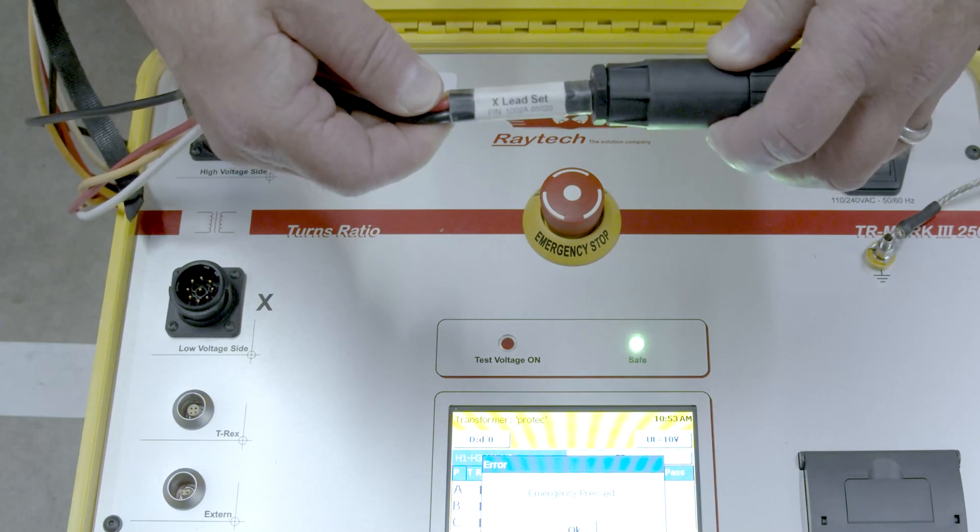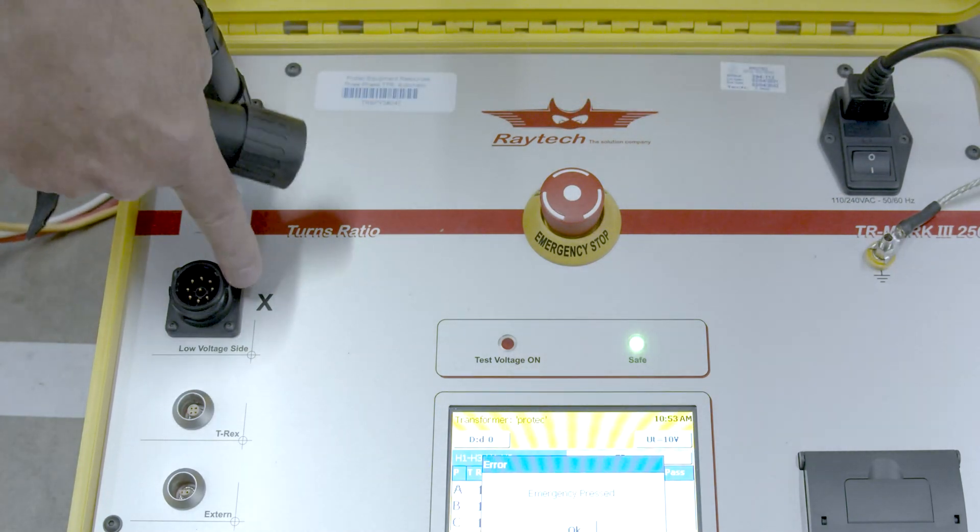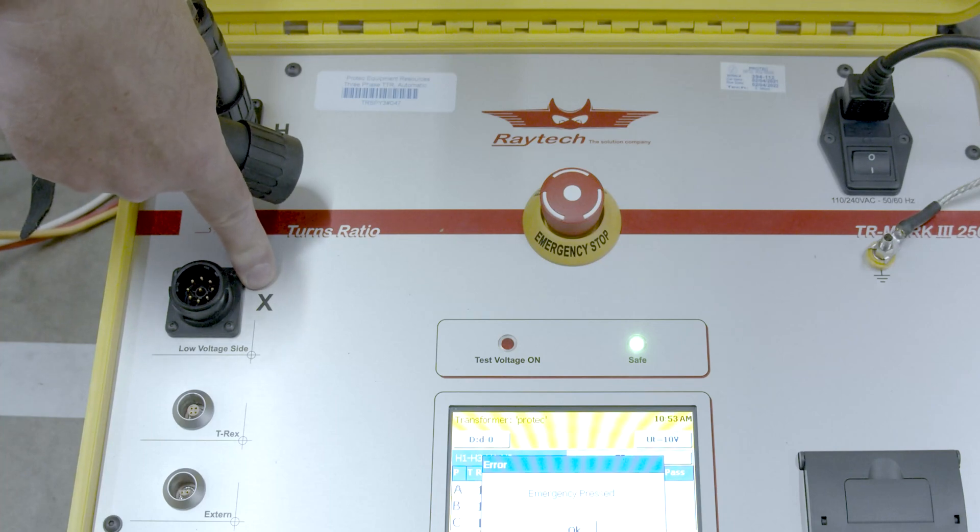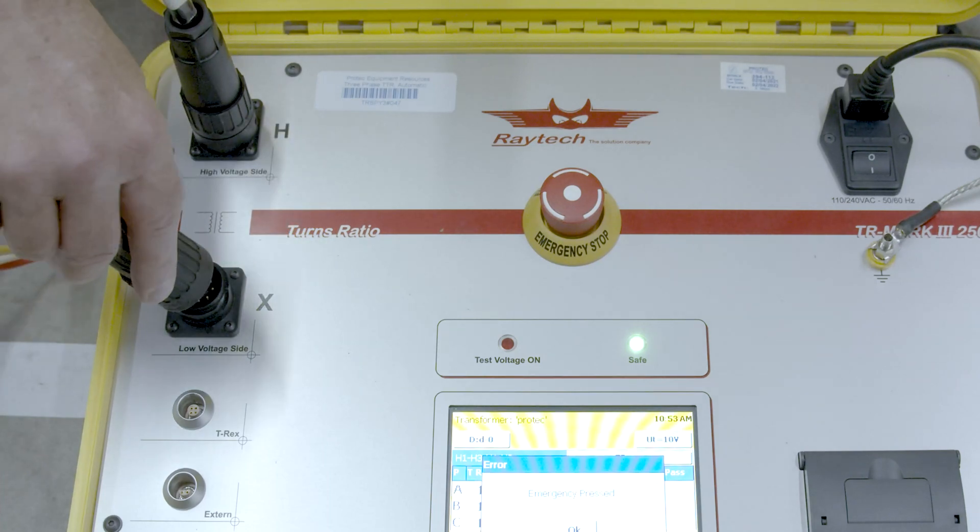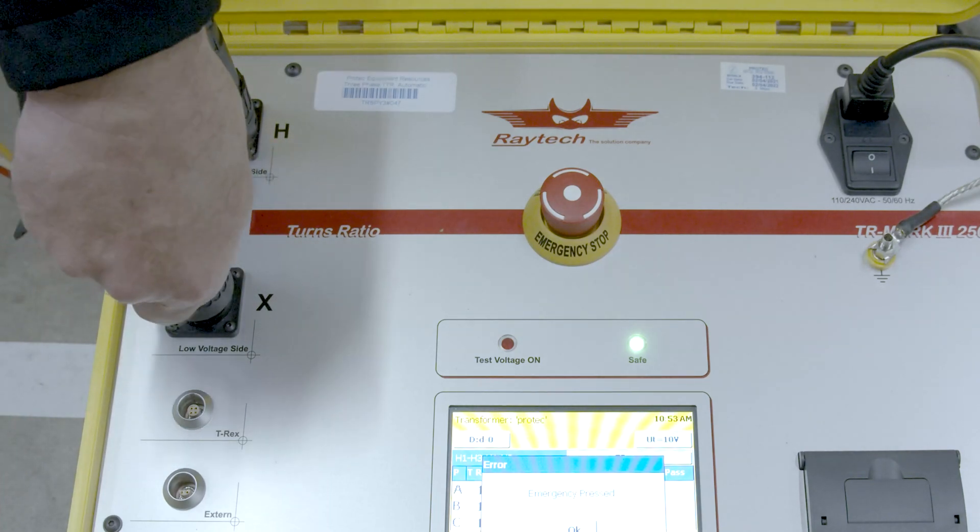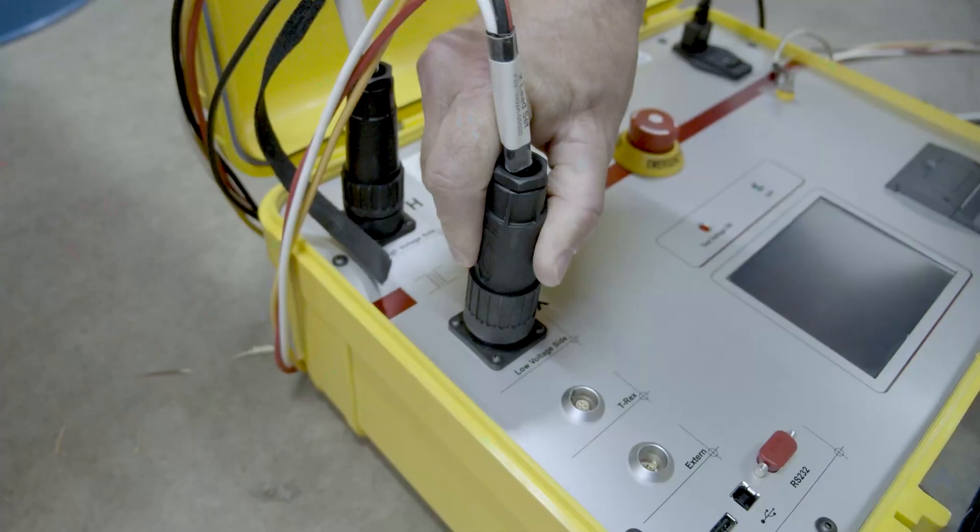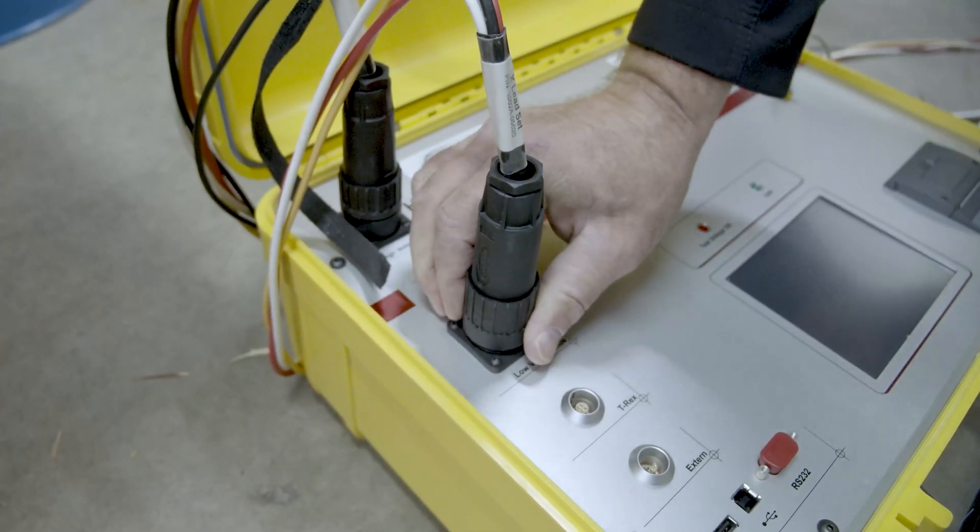So again, this is the X leads for the secondary of the transformer. We're going to center it over the keyed connector, turn it till it falls in place, and then twist the collar until it locks in place.